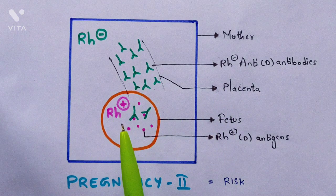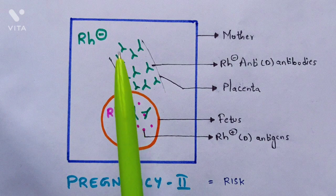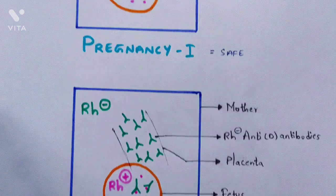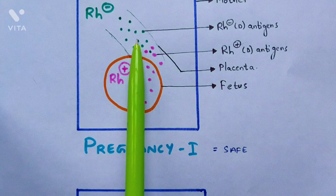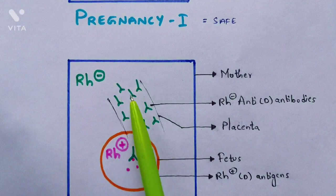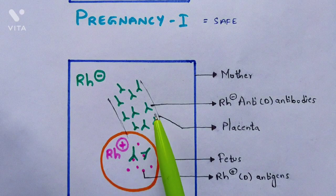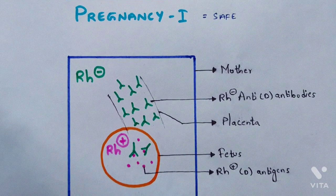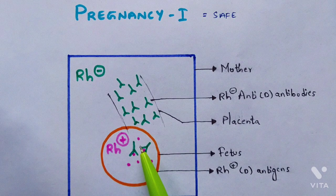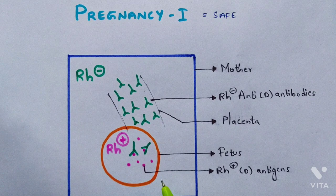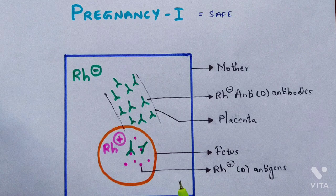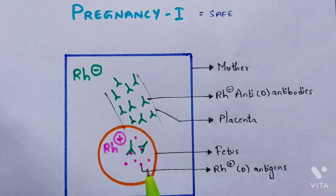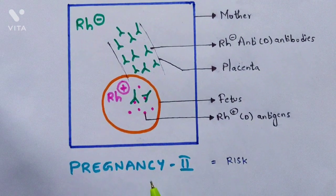In Pregnancy 2, the fetus again has Rh-positive antigens on its red blood cells. Because Rh-positive antigens entered the mother's bloodstream during the first pregnancy, her immune system has now produced antibodies against them. These antibodies enter the fetus's bloodstream and interact with the Rh-positive antigens, leading to hemolytic disease — erythroblastosis fetalis. The delivery in Pregnancy 2 is very risky, and sometimes the fetus dies.